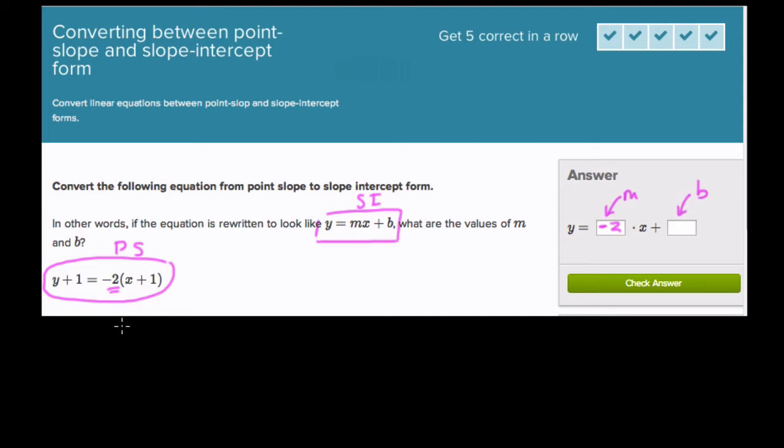And then you can find the y-intercept. How? Well, probably the best way to do that is to rewrite this using algebra. I think that's my favorite way of doing it. If you have y plus 1, and then on the right side, negative 2 times x is negative 2x. Negative 2 times 1 is negative 2.